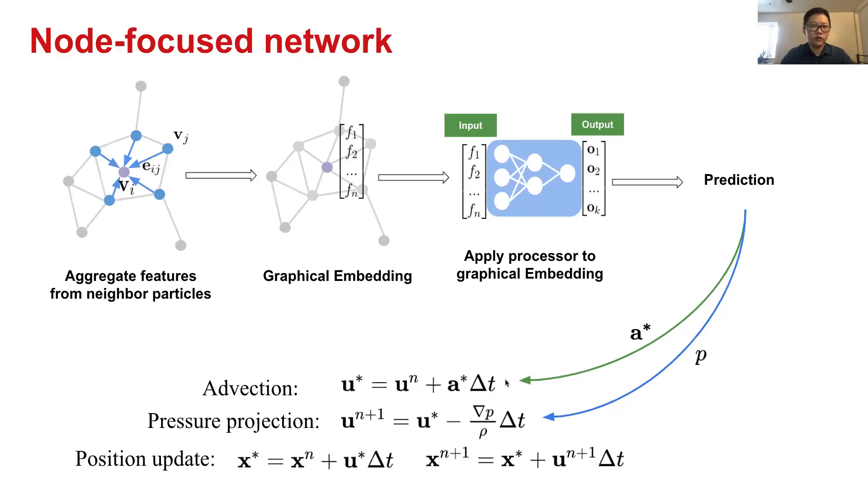First, for node-focused network internally, we aggregate features from neighbor particles, that is the aggregation from the neighbor. This is like a convolution in terms of the graph. Then after doing this, we got a vector that is the graphical embedding on every node. We will apply a shared multilayer perceptron to the feature, every node feature. The multilayer perceptron is shared across all the nodes in the graph.